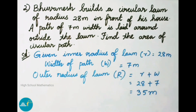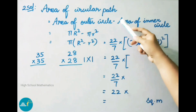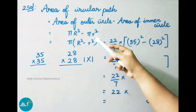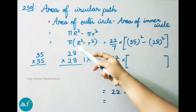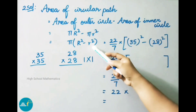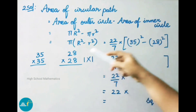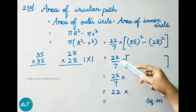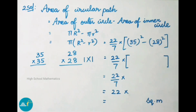Now we find the area of the circular path = area of outer circle − area of inner circle = π·R² − π·r² = π(R² − r²) = 22/7 into (35² − 28²). For quick multiplication of 35 × 35: last digits are 5, so 5 × 5 = 25; first digit 3, next number is 4, so 3 × 4 = 12. Therefore 35² = 1225.